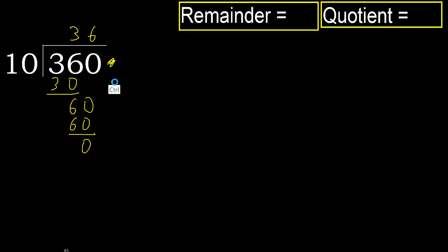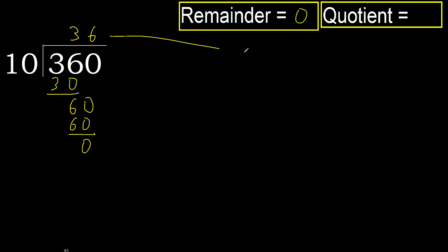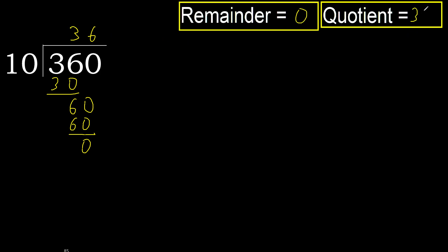That is not a number, therefore finish it. Ok, 360 divided by 10 is 36.